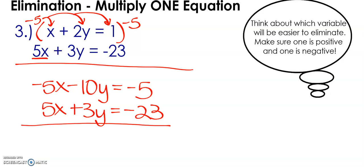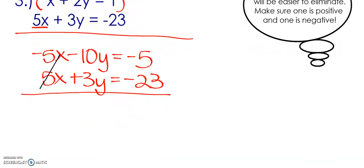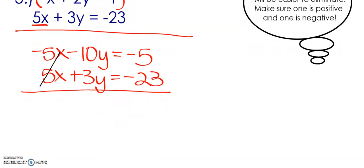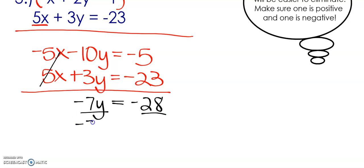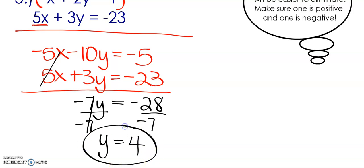We're ready to combine the two equations. The x's cancel. Negative 10y and 3y gives negative 7y. And negative 5 and negative 23 is negative 28. Dividing both sides by negative 7, we get y equals positive 4, because negative 28 divided by negative 7 is positive 4.